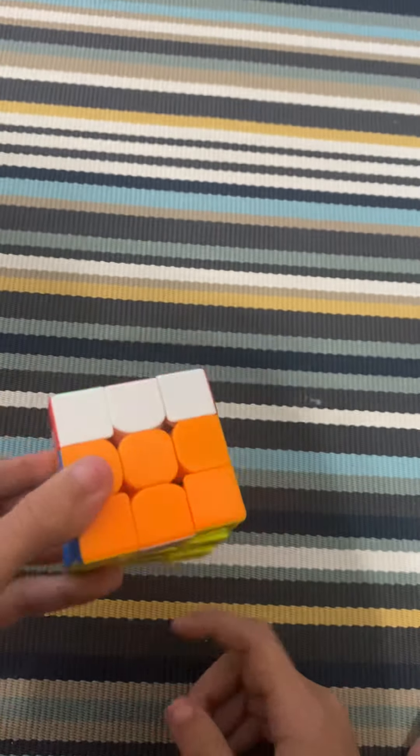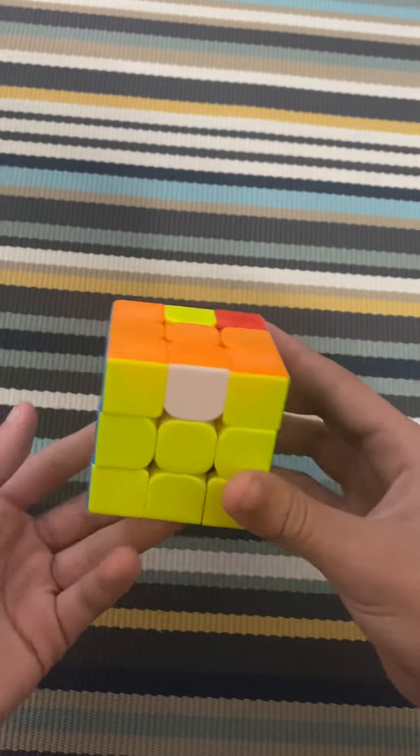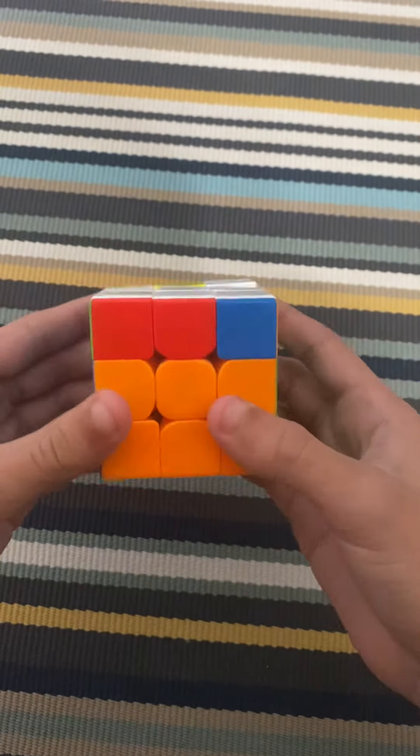So now you have to view this as an OLL case you would get in CFOP for example. So here I would do this, and we got this yellow edge flip. So we did not get the bad case.